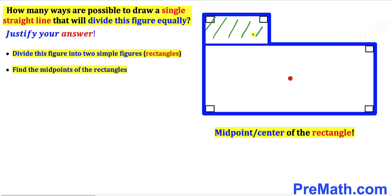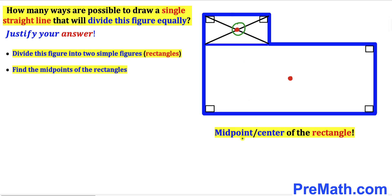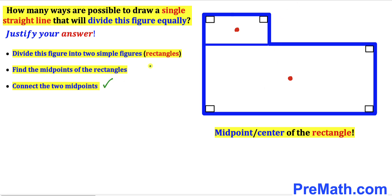Now let's focus on the other rectangle and find its midpoint as well. We draw the two diagonals for this rectangle, and these two diagonals intersect each other at a point — so this intersection point is the midpoint of this second rectangle.